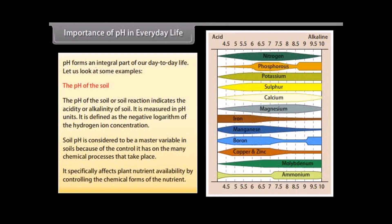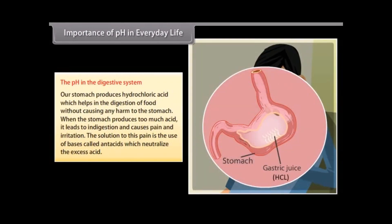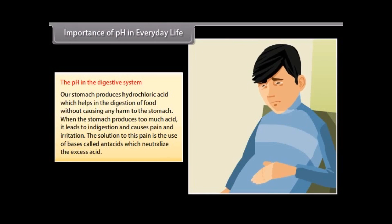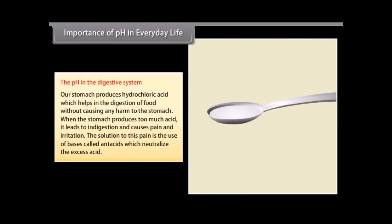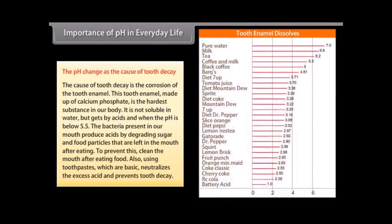It specifically affects plant nutrient availability by controlling the chemical forms of the nutrient. The pH in the digestive system: our stomach produces hydrochloric acid which helps in digestion without causing harm. When the stomach produces too much acid, it leads to indigestion and causes pain and irritation. The solution is the use of bases called antacids, which neutralize the excess acid. The pH change as a cause of tooth decay: the cause of tooth decay is the corrosion of tooth enamel, made up of calcium phosphate. It is not soluble in water but gets corroded by acid when the pH is below 5.5. Bacteria in our mouth produce acids by degrading sugar and food particles. To prevent this, clean the mouth after eating and use toothpastes, which are basic, to neutralize excess acid and prevent tooth decay.